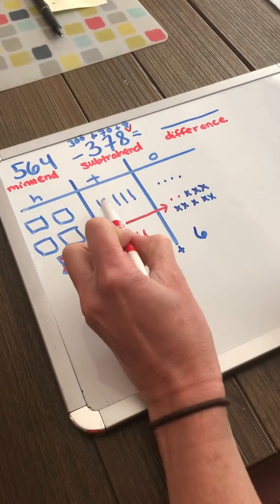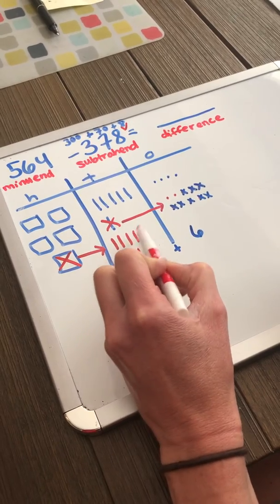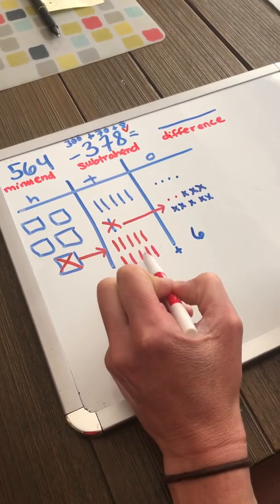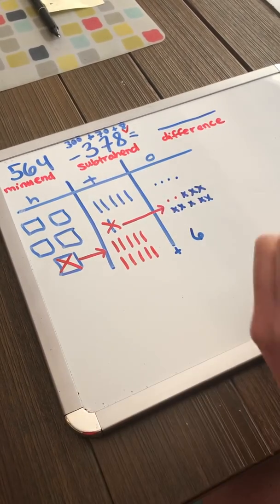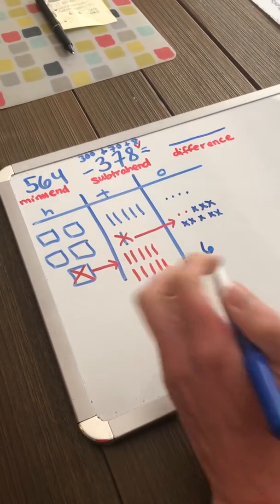So I'm going to have to exchange my 100 for 10 tens. Now I count up: I have 15 tens in total, which is 150.